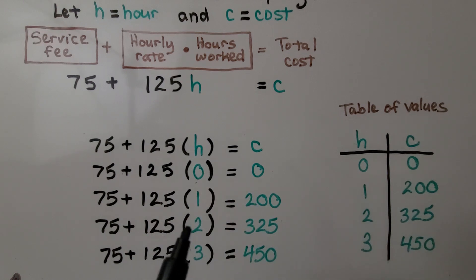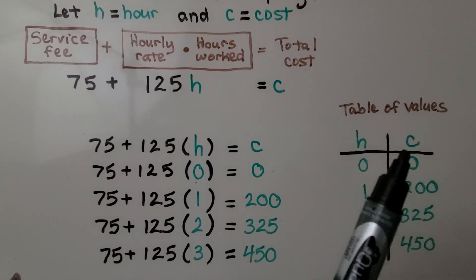And if they work two hours, the cost will be $325. If they work three hours, it will be 450. And we can actually make a table of values for the hours and the cost.